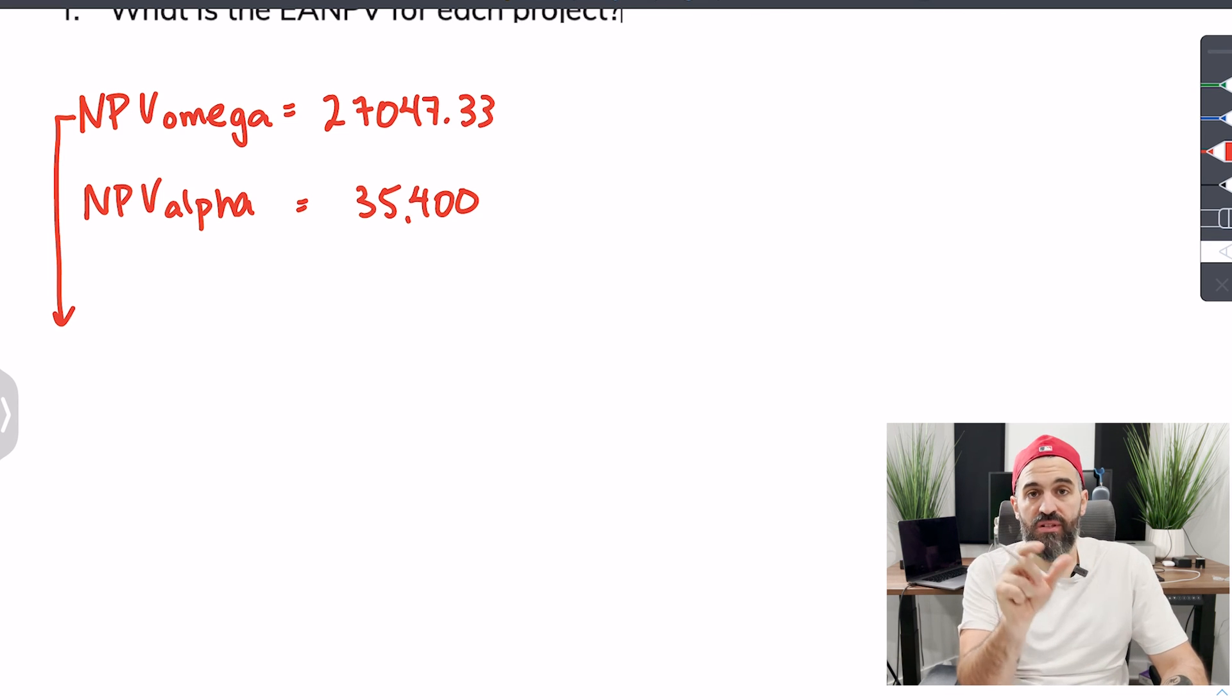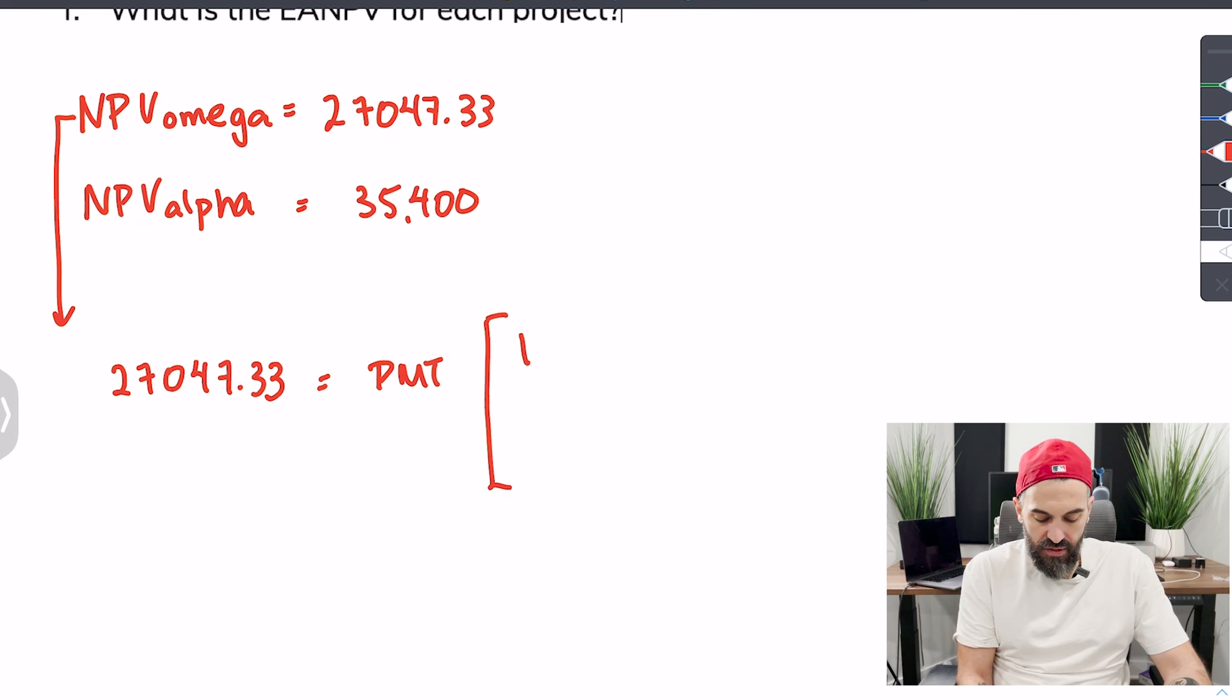That's what equivalent annual net present value is, is taking your present value turning it into an annual payment. So if you were to do this with the annuity formula you would set your present value to $27,047.33 and you'd be solving for the payment so I'm going to set that as my variable.